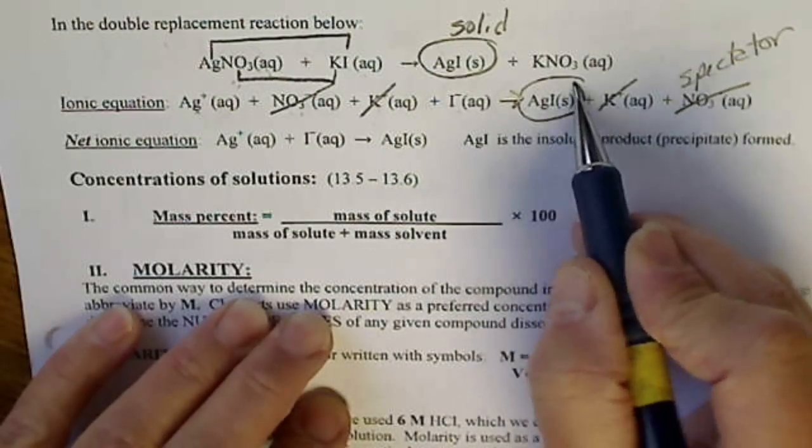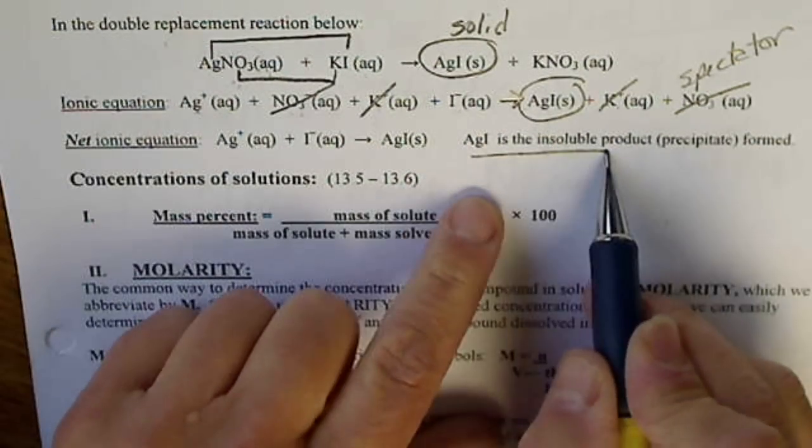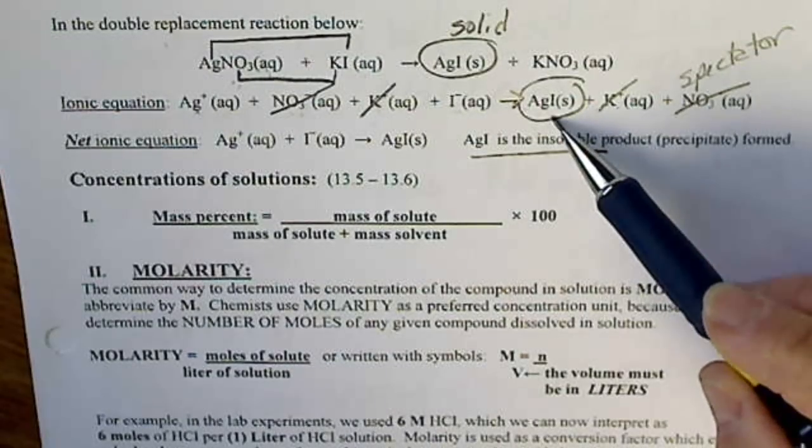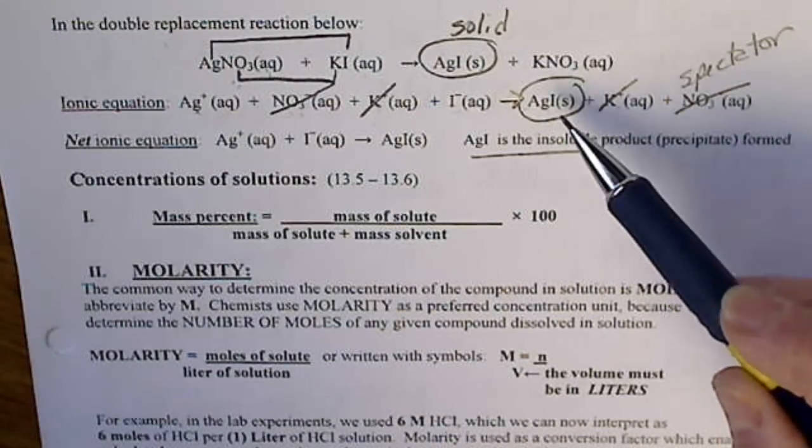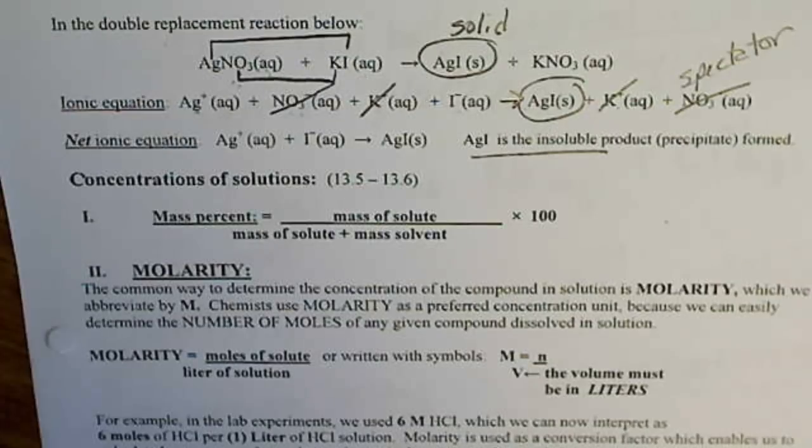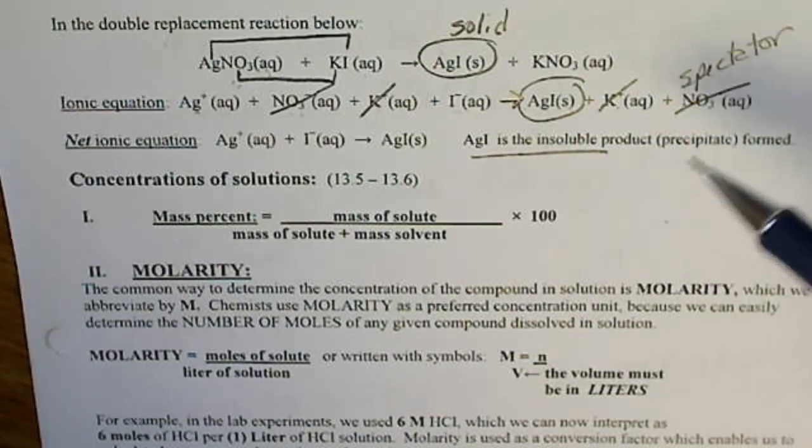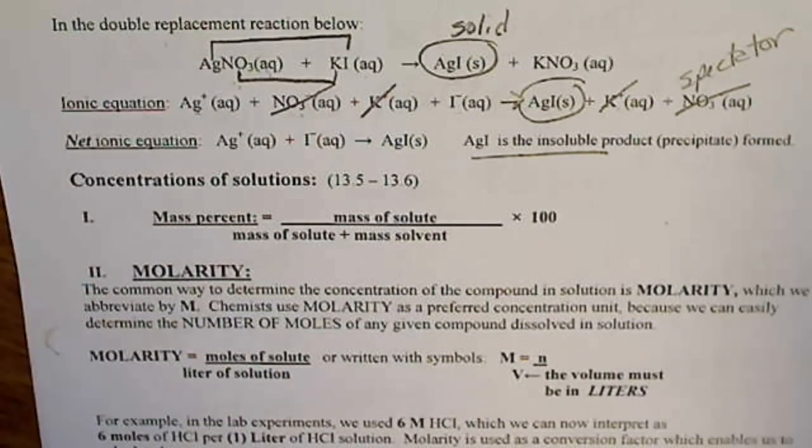Silver iodide, this is insoluble, so if we had a bottle of silver iodide that we bought, if we put that in water, it would not dissolve. So an insoluble compound comes out of solution as a precipitate.